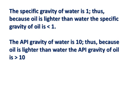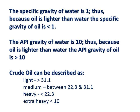Because oil is lighter than water, the API gravity of oil is greater than 10. Crude oil can be described as light, which is greater than 31.1 degrees API; medium, which is between 22.3 and 31.1 degrees API; heavy, which is less than 22.3 degrees API; and extra heavy, which is less than 10 degrees API.